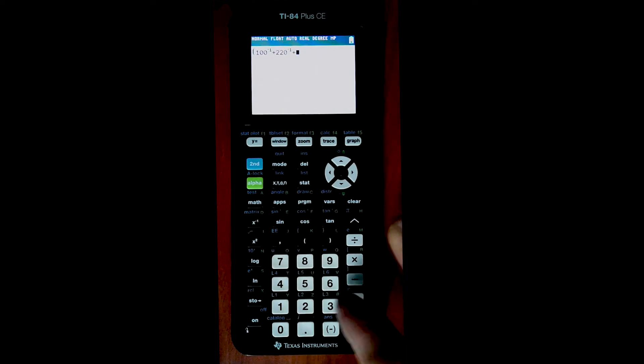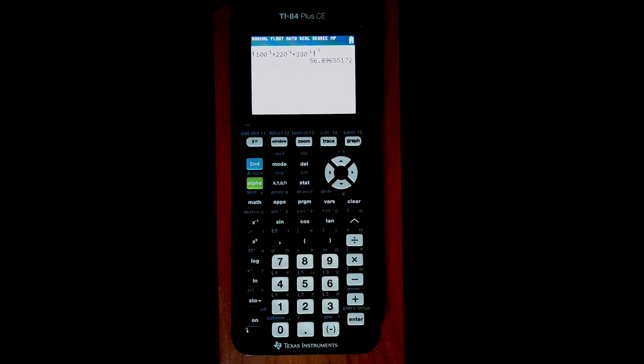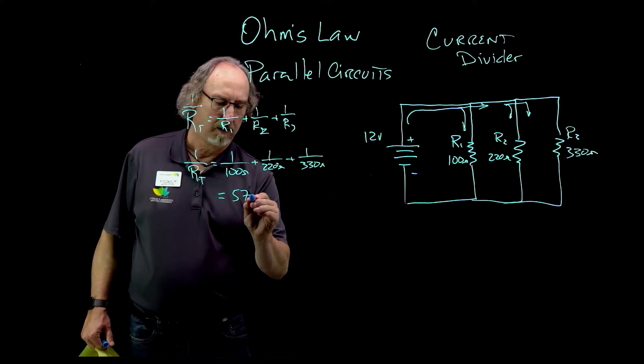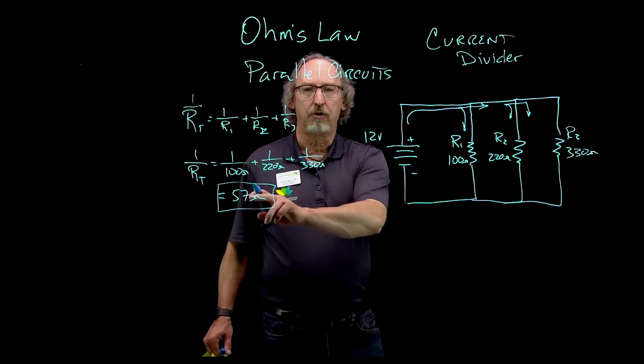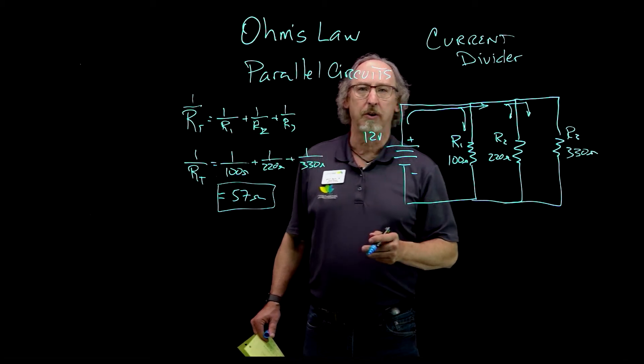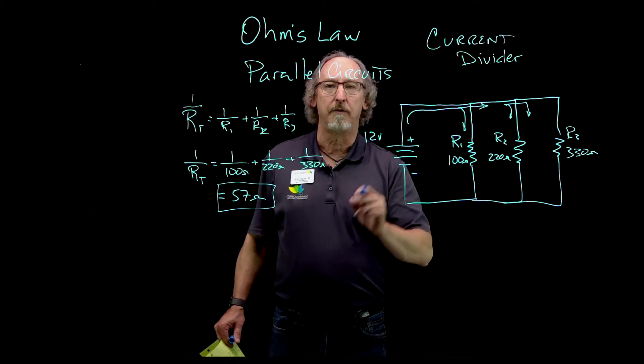The easiest way to do it is with parentheses: type in 100 and use your inverse key. Some calculators use x to the negative 1, like this one; others use 1-over-x. So I've taken the first inverse, then 220 inverse, 330 inverse, close the parenthesis, and take the inverse once again, and I come up with my answer — about 57 ohms.